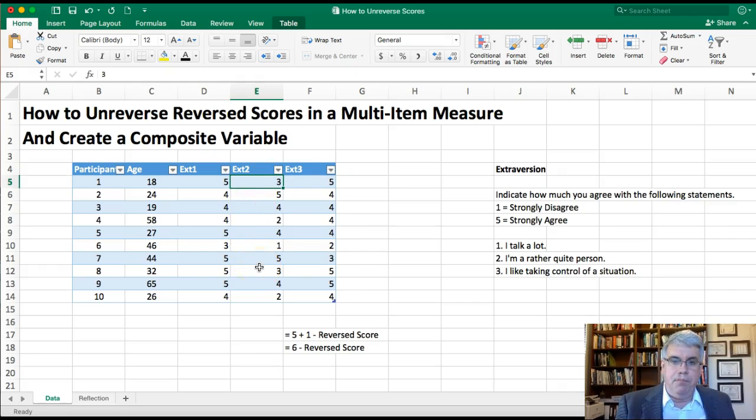So we've gotten rid of the reverse scores and they all mean the same thing: one means low extroversion or introversion, and five means high extroversion. Now what we need to do is, when we measure the different, when we've got three items on extroversion, we need to put them together in a composite variable. And the composite variable takes all the nuances that are in each question and combines them all into one score that should be better than any individual score, since each of the individual items are measuring some aspect of extroversion. If we average them all together, we should get all the aspects that we measured together.